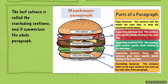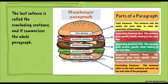We have this method called the hamburger paragraph. The hamburger paragraph is pretty cool because it breaks it down as if it's a hamburger. The first sentence and the last sentence are basically the bun because they're almost the same — the top and the bottom taste the same, but are slightly different. The top part is the topic sentence, and this sentence tells the reader the main idea or what the paragraph will be about.